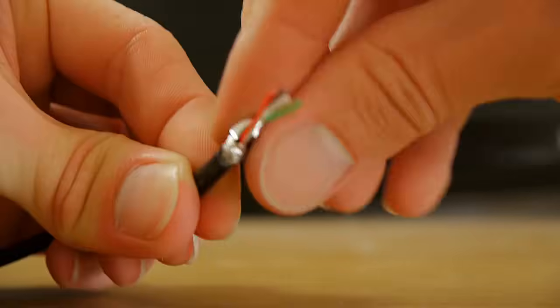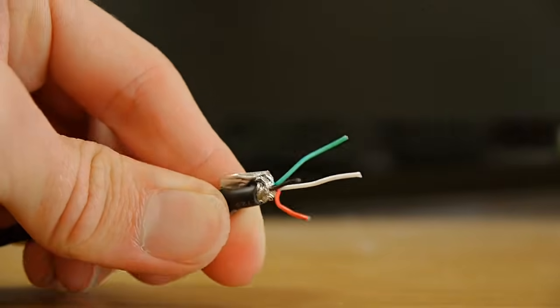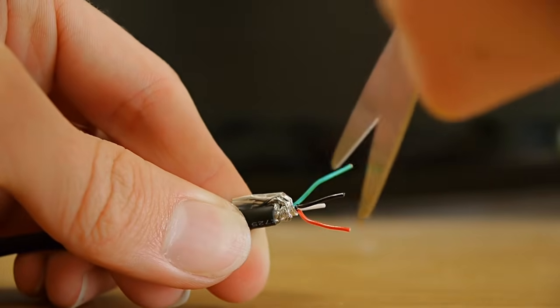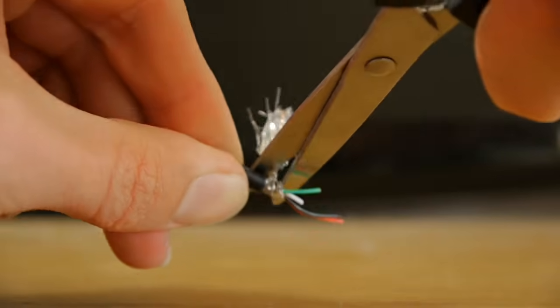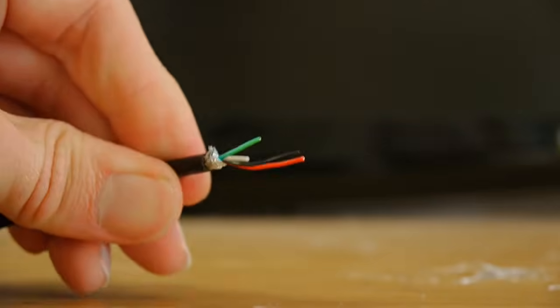Cut the USB cable to the length you want and then strip it just like before. The white and green wires are not needed for this project, nor is the shielding, so they can be cut back at different lengths to avoid short circuits. To be extra secure, using some electrical tape would be ideal.